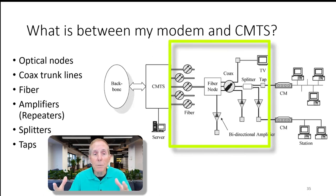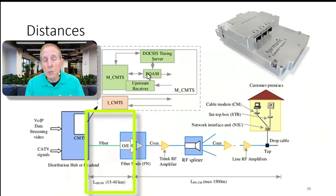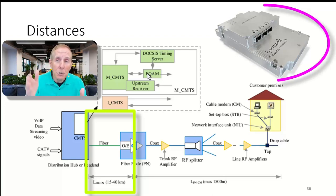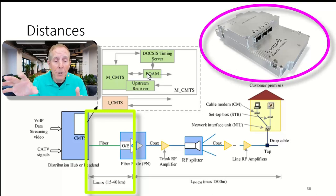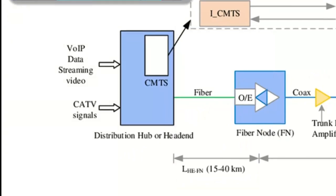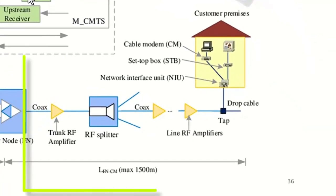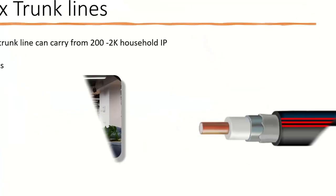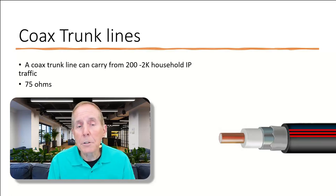This diagram shows some of the maximum distances. I've got my CMTS on the left, and I can go fiber to a fiber node, which you see a picture of in the top right. There's a maximum distance of about 40 kilometers between a CMTS and the furthest fiber node. Once we get to where we're dealing with coax, we've only got about a 1,500-meter distance that we can do with coax trunk lines. Coax trunk lines can carry between 200 to 2,000 households. They're a cable that has 75 ohms of impedance.